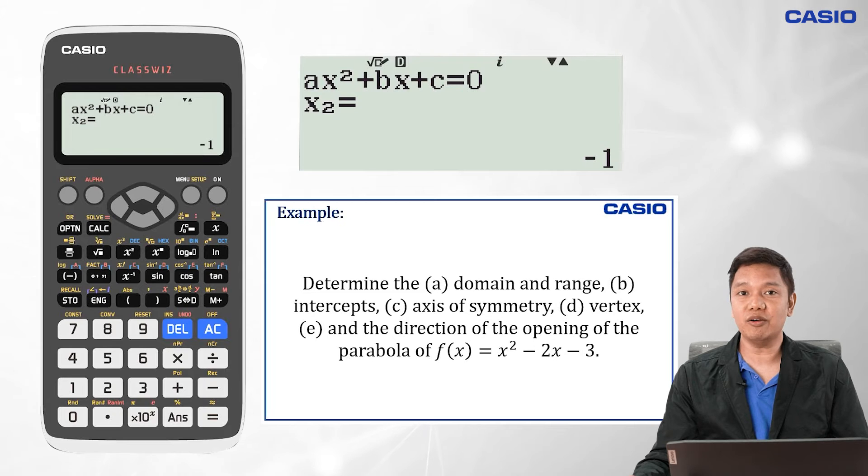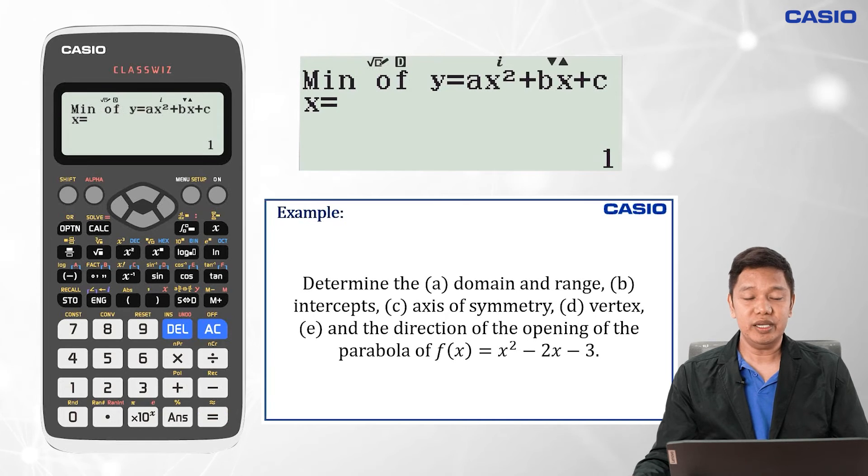of the highest or lowest y-coordinate depending upon the opening of the parabola. When we press equals again on our Casio calculator, we can see the minimum of y equals ax² plus bx plus c. Therefore, the graph opens upwards, thus our y-coordinate will be the lowest value for the range. Hence, our range will be all values of y such that y is greater than or equal to negative 4.